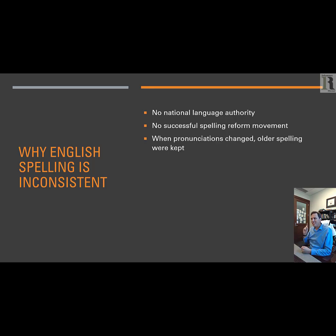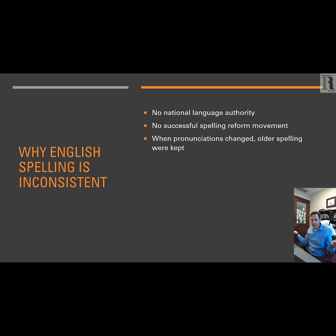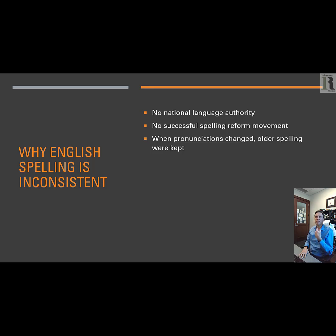Here's another thing: when pronunciations changed in English, for who knows why, older spellings were kept. Take 'knight' — what's the K doing there? What is the GH doing there? Well, back in 1350, when there were knights running around, it was pronounced 'knicht,' with the K being pronounced before the N, and that GH being what's called a velar fricative — like a cat hissing, or the vampires in What We Do in the Shadows. All the letters were pronounced.